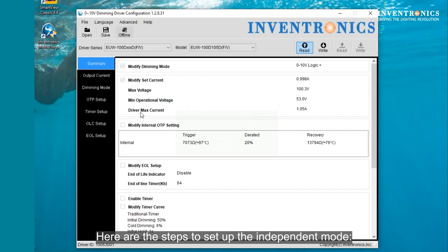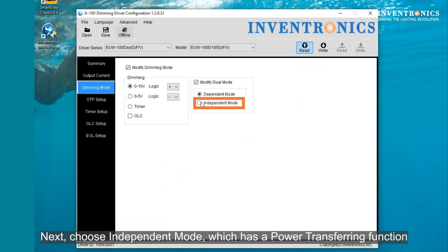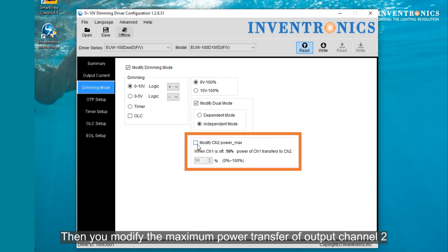Here are the steps to set up independent mode. First, click on the dimming setting and select modify dual mode. Next, you will choose independent mode which has the power transfer function. Then you will modify the maximum power transfer output of channel 2.